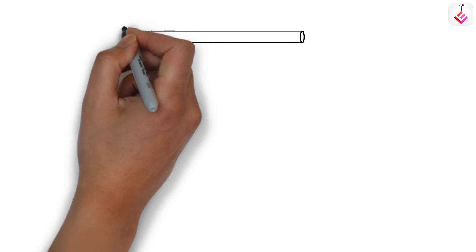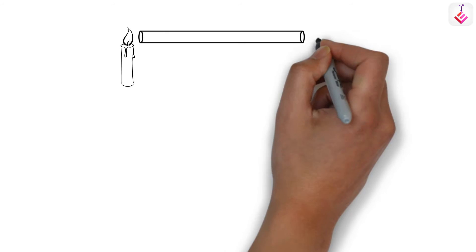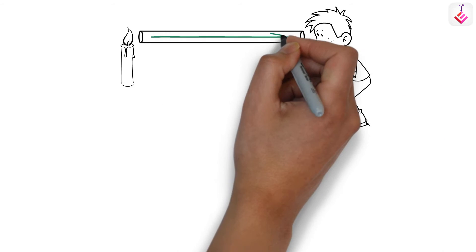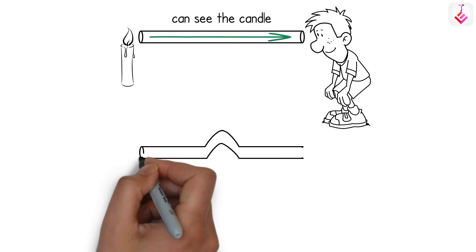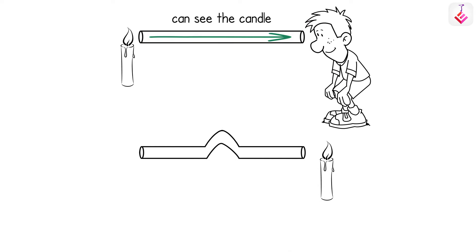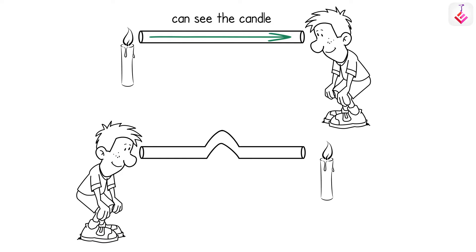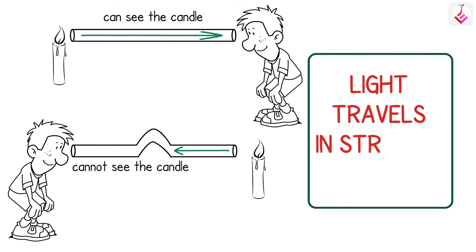Take a pipe and put a candle on the opposite side. Now try to see the candle through the pipe. Yes, you can see the candle. Now, let's bend the pipe in the middle. Let's try to see the candle again. Can you see it now? No, you cannot. Because light travels in straight lines only.